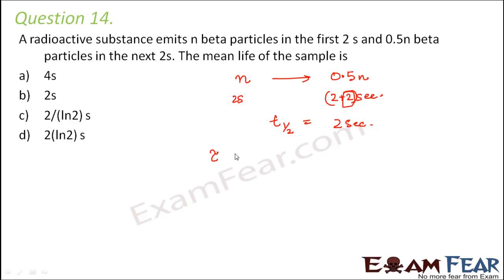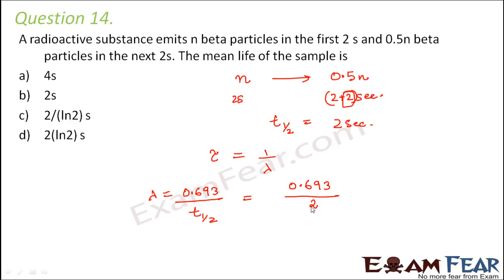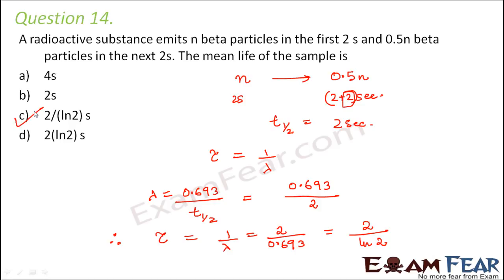We know that mean life or average life equals 1/λ, and λ equals 0.693 divided by T-half. So λ equals 0.693 divided by 2. Therefore, Tau or mean life equals 1/λ, which is 2 divided by 0.693. This value is equal to 2 divided by the natural log of 2. So option C is the right answer.